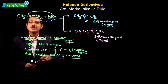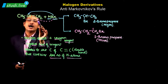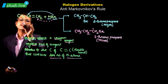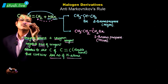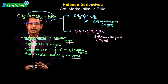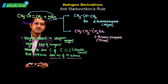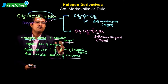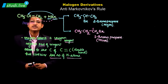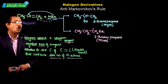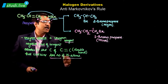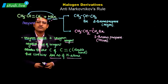To begin with, this is our unsymmetrical alkene — propene. This unsymmetrical alkene, propene, will react with HBr. When propene reacts with HBr, we already mentioned that we get 2-bromopropane and we get 1-bromopropane.